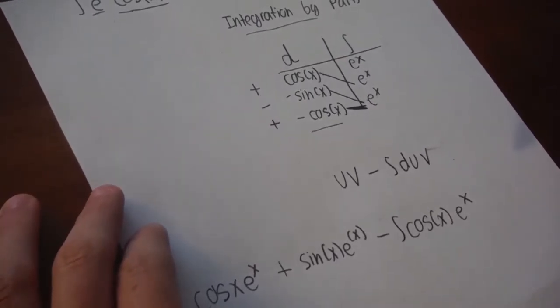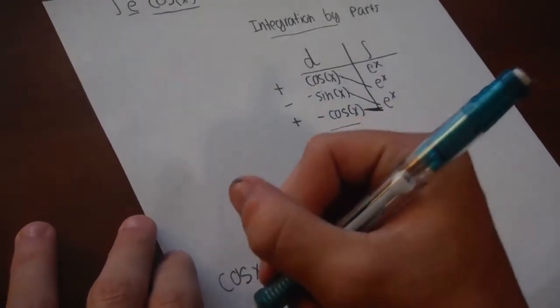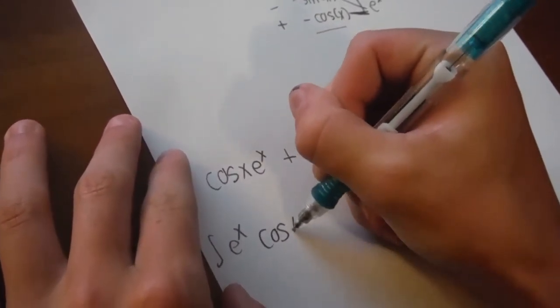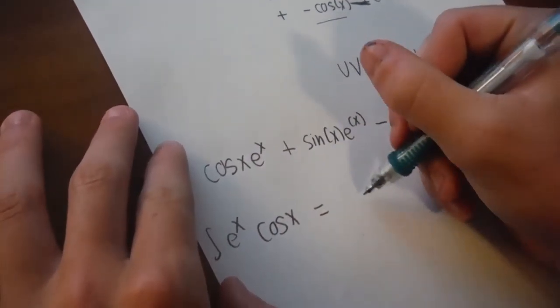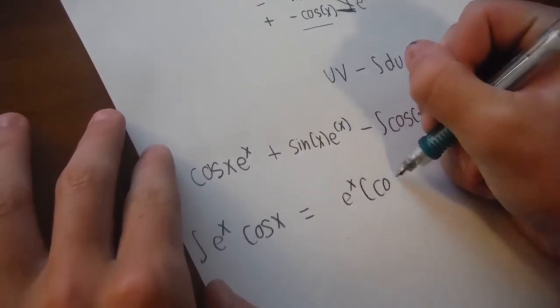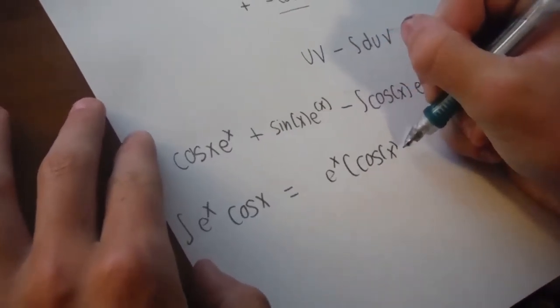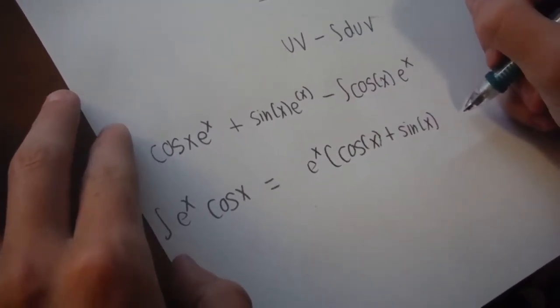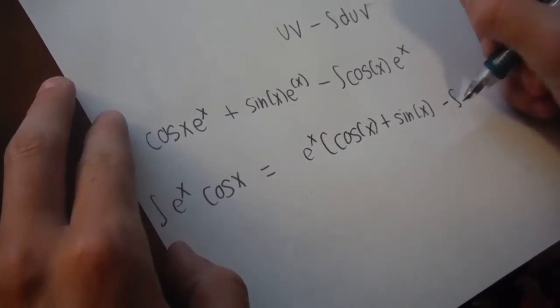Okay? So if we simplify a little bit here, we have the integral of e to the x cosine x is equal to e to the x times cosine of x plus sine of x minus the integral.